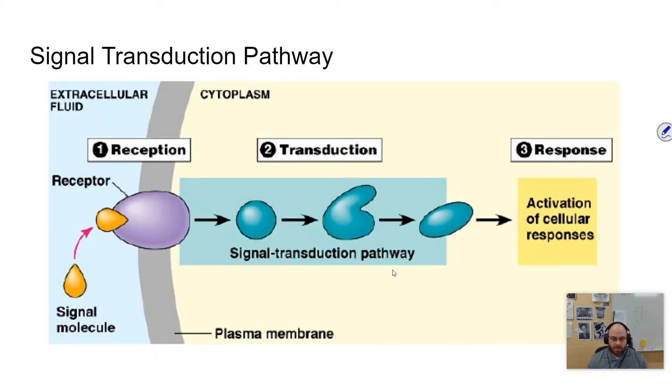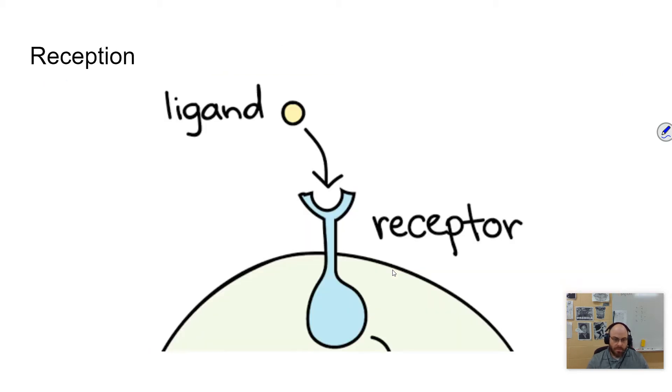Reception, receiving the message, transduction. Transduction is basically converting that signal into a thing that can bring about a cellular response. And then the response is going to be usually making a protein. That response, or that transduction, is going to make its way into the nucleus to turn on some section of the DNA in order to make some sort of protein to do some sort of cellular thing. That is the way that cells operate is by making proteins. And so that is going to usually be the end of this pathway is to make a protein.